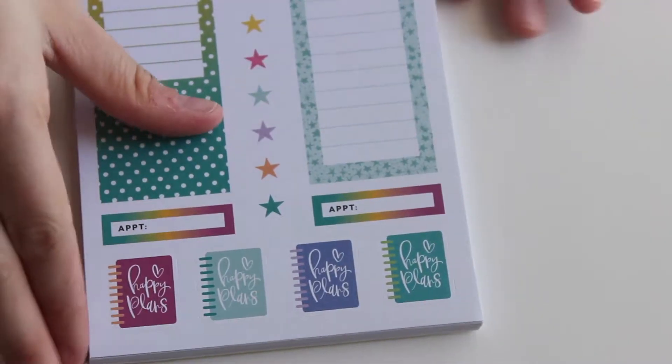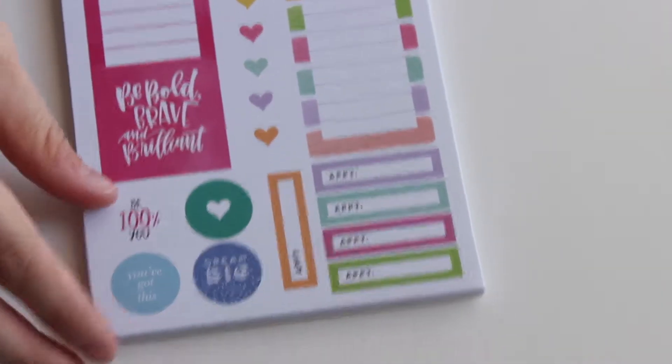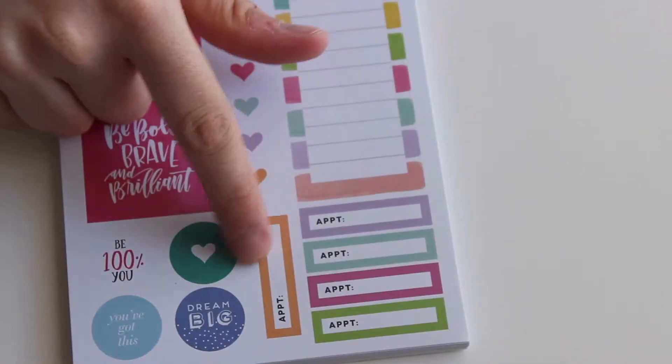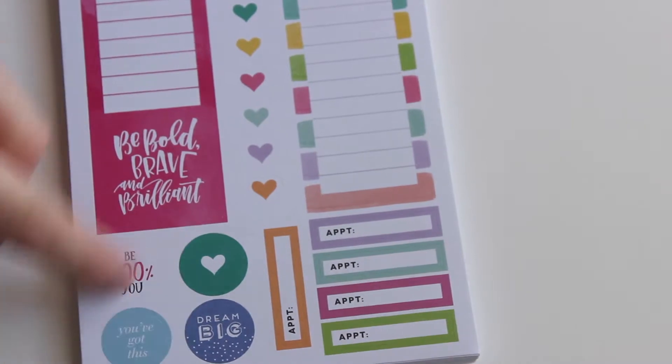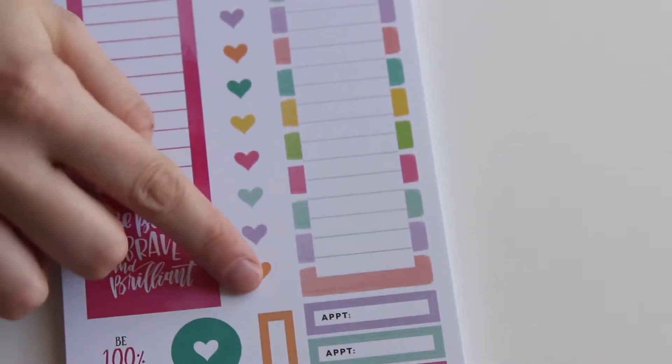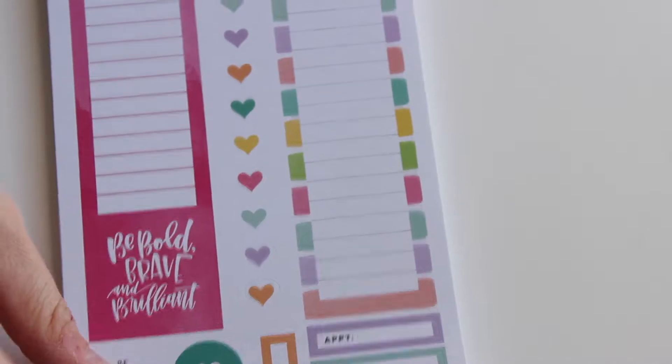I love these little happy plans stickers. And this is just the same. It's got appointment stickers and the little circles. And these are the individual hearts on this page versus the stars.